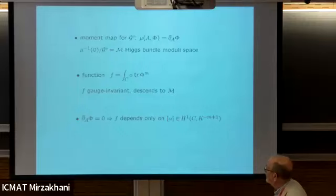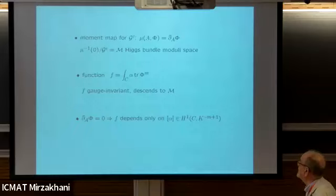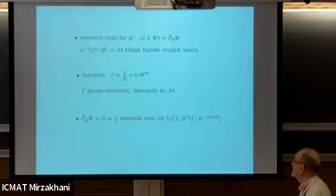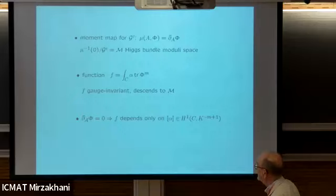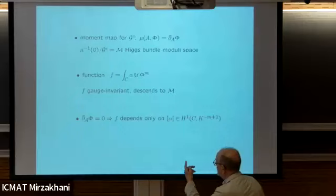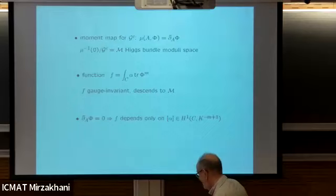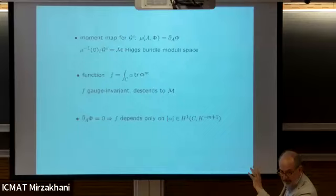The underlying idea is that independence from the nonlinear aspects - the holomorphic structure - means these things don't affect these functions. The moment map for this infinite dimensional complex group with respect to the symplectic form turns out to be the D-bar of phi. So the zero set of the moment map consists of pairs where phi is holomorphic with respect to the given holomorphic structure. The function we wrote down is gauge invariant, and when D-bar phi equals zero, this function only depends on the Dolbeault cohomology class of alpha.